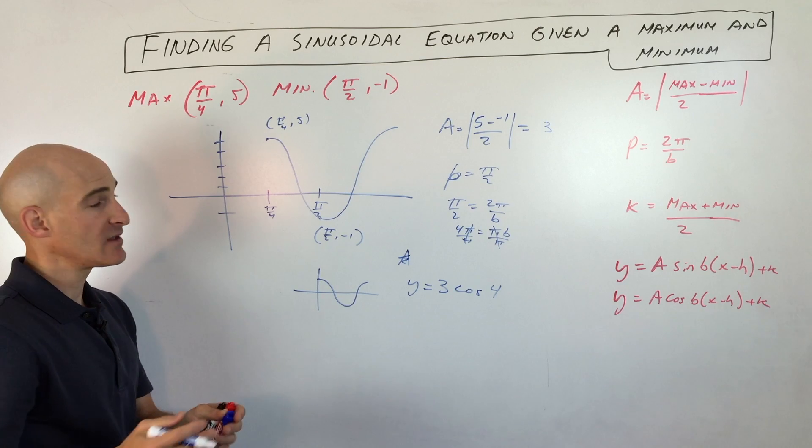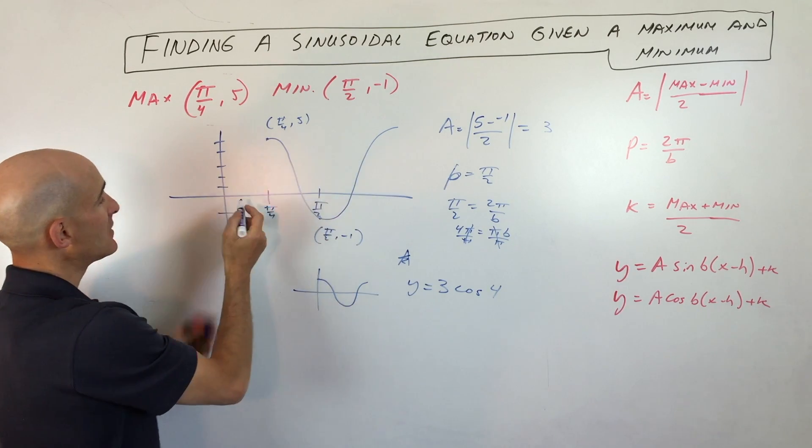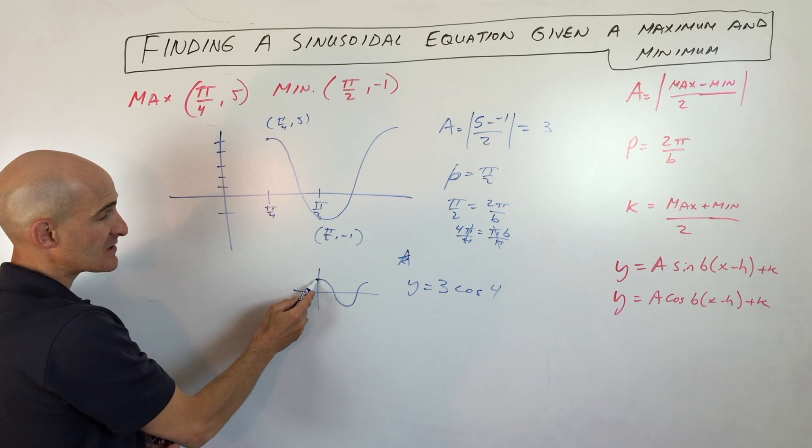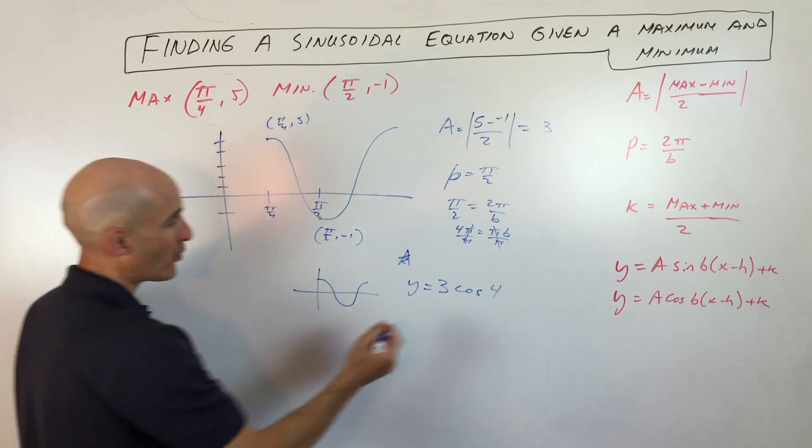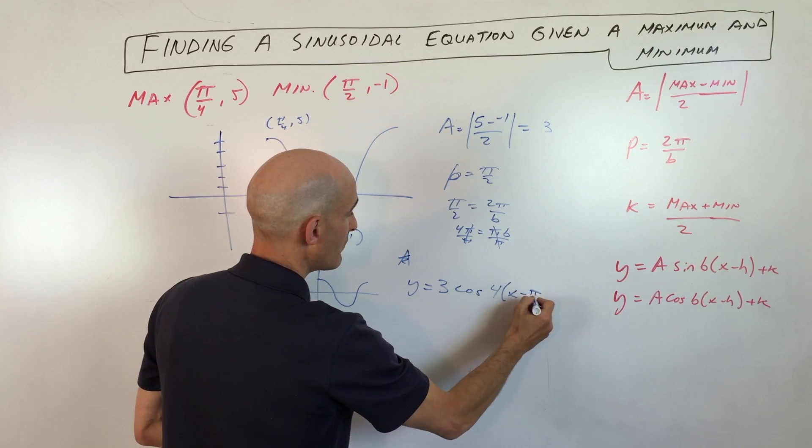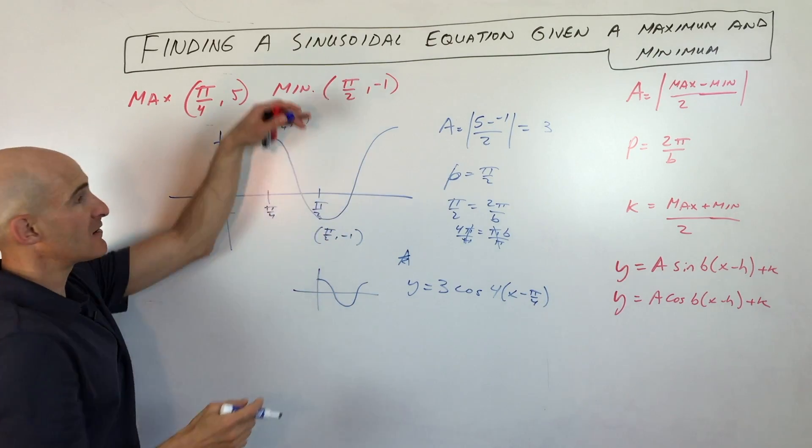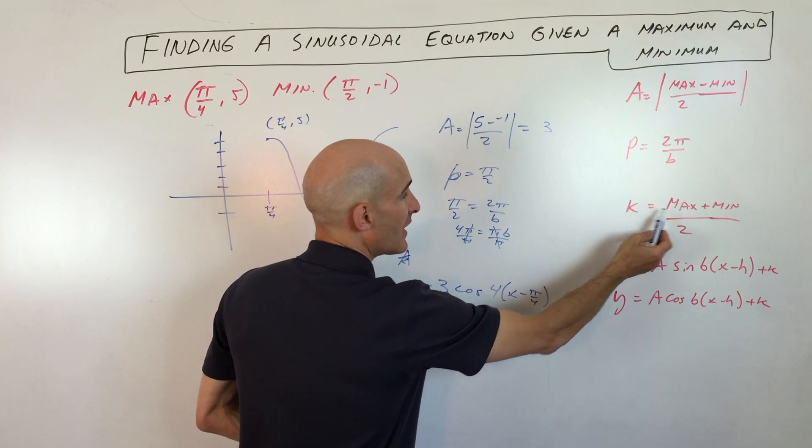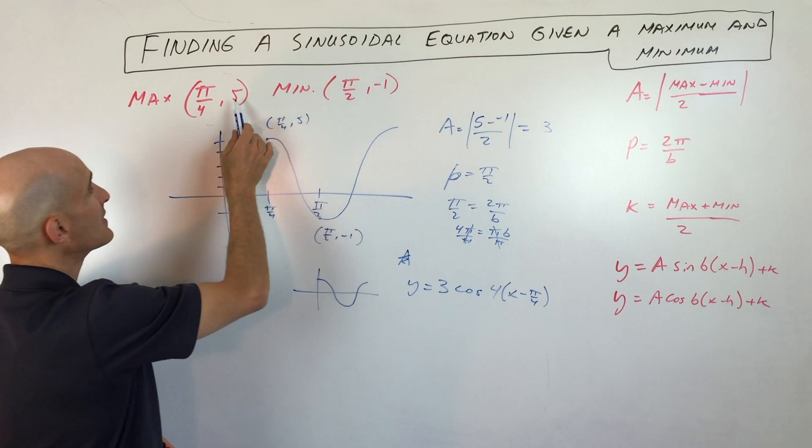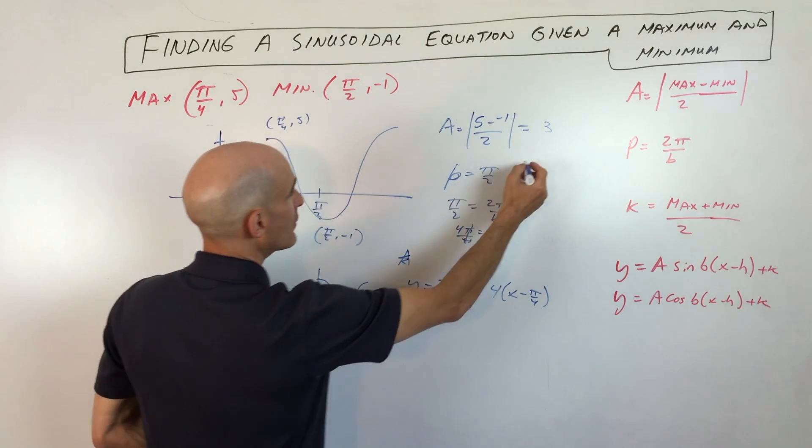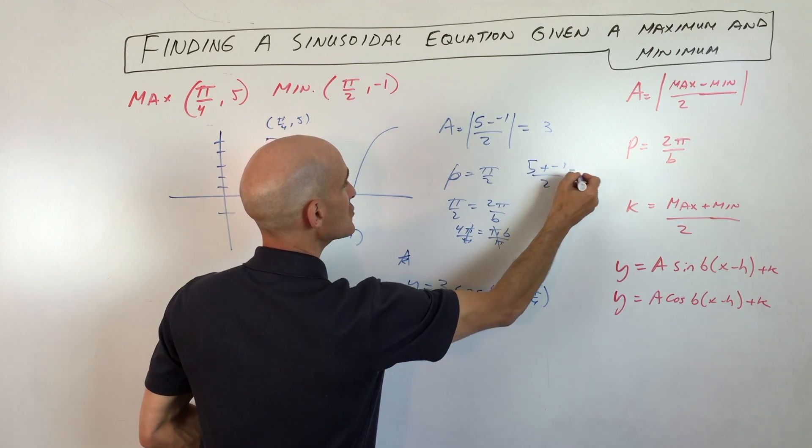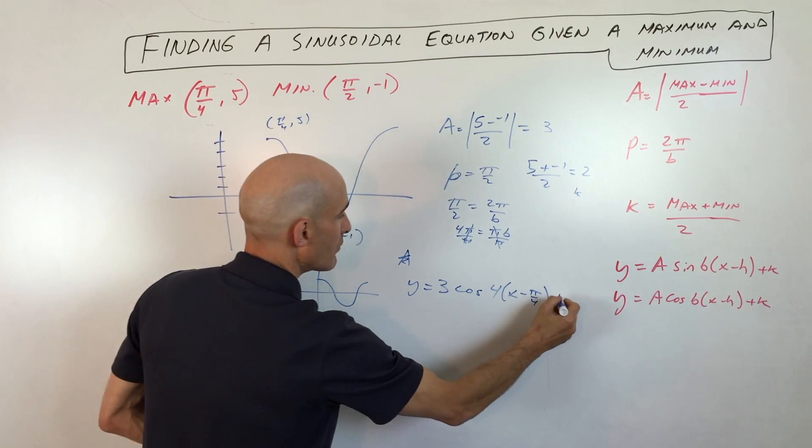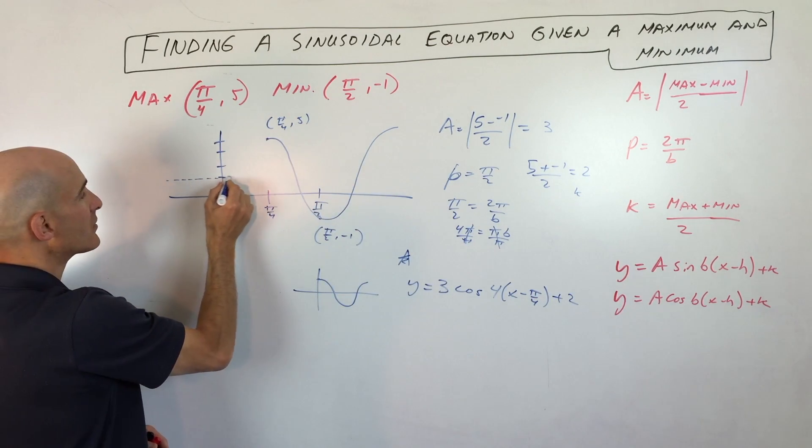And then we want to take into account the phase shift, so the left and right shift. Normally this point would be starting over here, right at the y-axis. So you can see it's being shifted right pi over 4. So this is going to be x minus pi over 4. And if you want to find the vertical shift, up or down, you can use this formula for K, max plus the min divided by 2. So I'm going to take the y values, 5 plus negative 1. So 5 plus negative 1 divided by 2. So that comes out to 2. So that's our K value. So that means that this is going to be plus 2. And I'm just going to draw this midline in here.